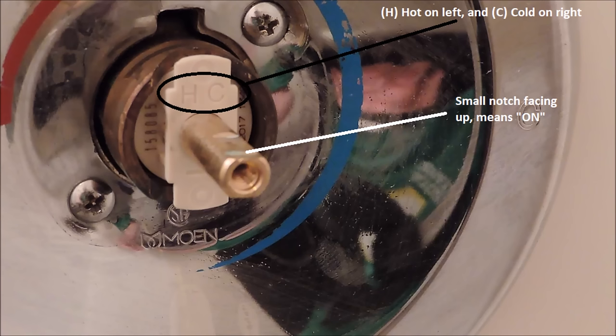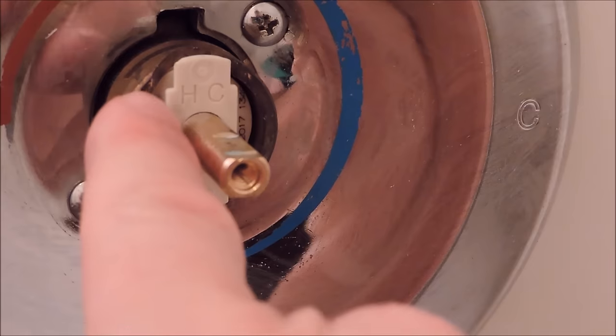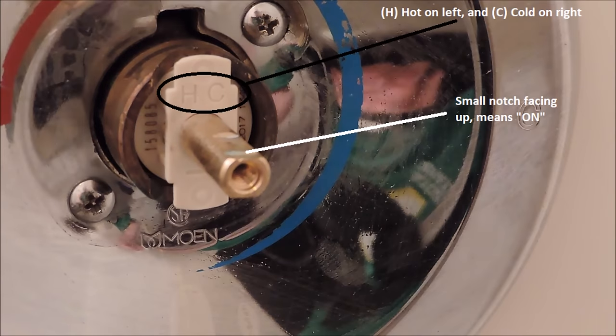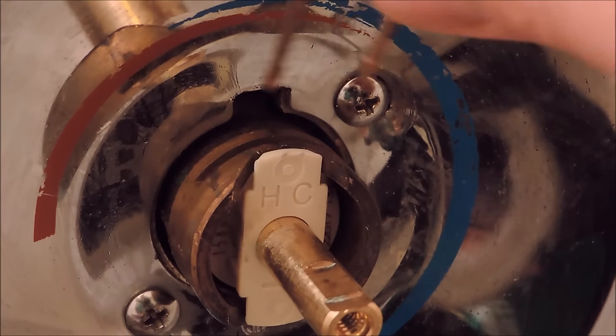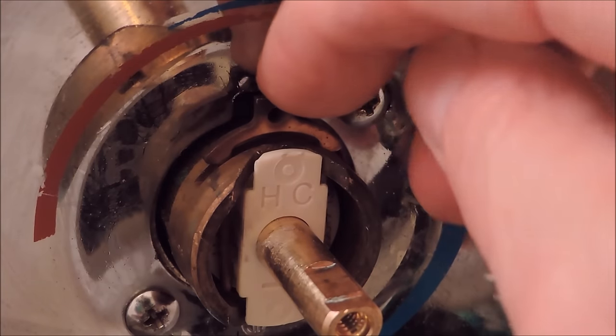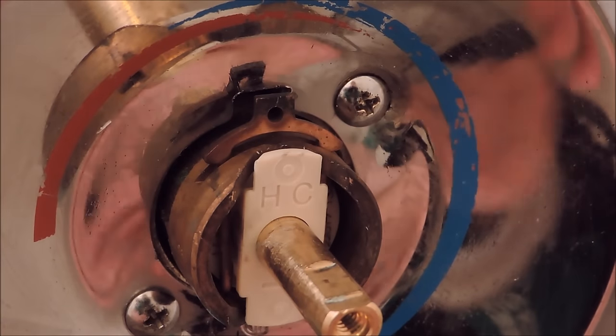Make sure when you put the cartridge in, the H is on the left and the C is on the right, hot and cold. And make sure the small notch is facing up because that means it's on the on position, the same position we took it off. So now you want to put the retaining clip back in. That secures the cartridge in place so it won't come out.